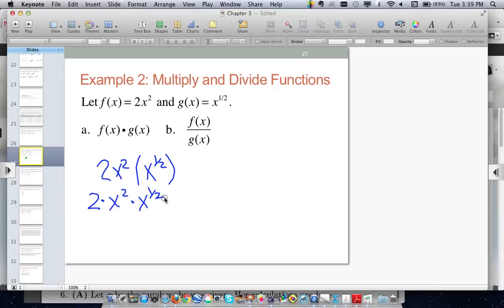Well, we already know that when we're multiplying powers, if the bases are the same, we just add the exponents. So we're adding 2 plus 1/2. But we're going to replace this with 4/2, because we want to have common denominators. So 2 times x to the 5/2.